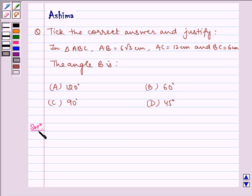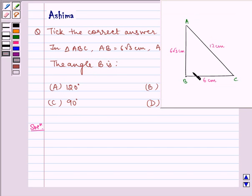Now before adding solution let us look at the figure. Here we have triangle ABC where AB is equal to 6√3 cm, BC is equal to 6 cm, and AC is equal to 12 cm.